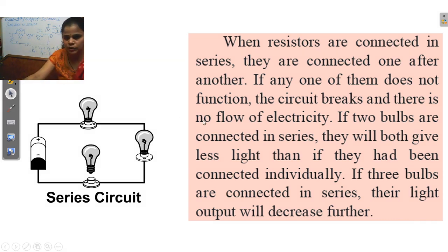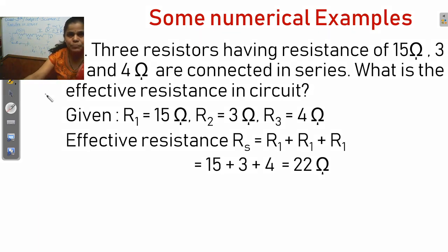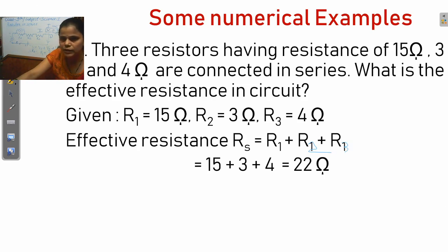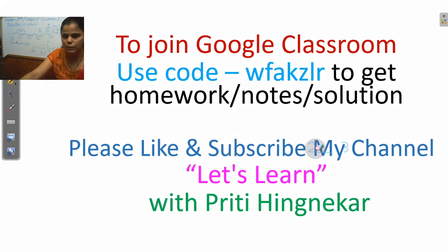This was today's lecture. Let's look at one numerical problem: if three resistors having resistances 15 ohm, 3 ohm, and 4 ohm are connected in series, what is the effective resistance? Using the formula R_S equals R1 plus R2 plus R3, we substitute the values: 15 plus 3 plus 4 equals 22 ohm. I hope you understood today's lecture. Please join the Google Classroom using the code to get homework, notes, and solutions. Thank you very much.